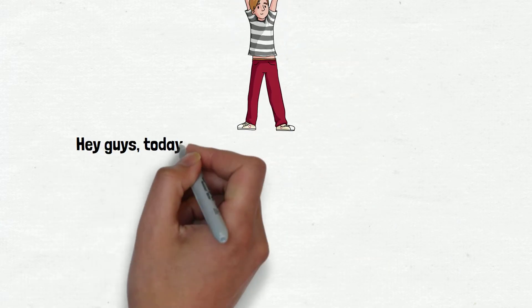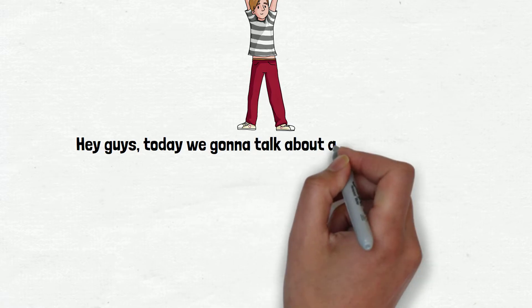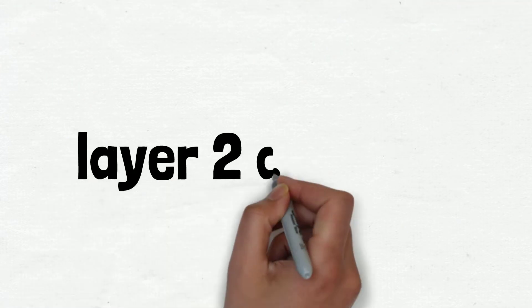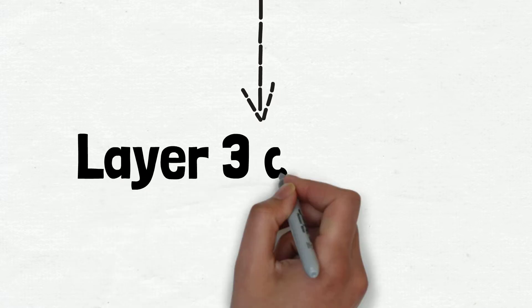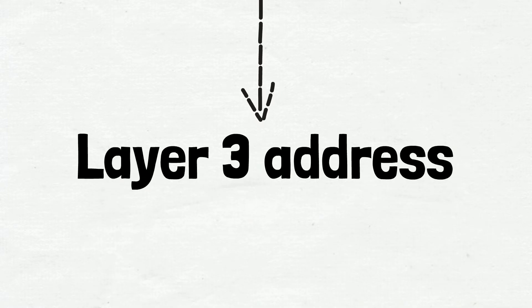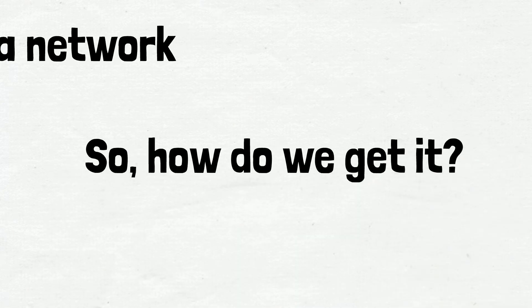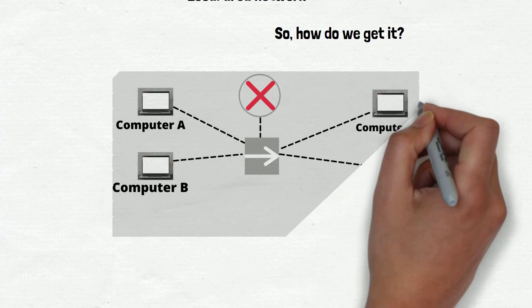Today we're going to talk about Address Resolution Protocol, or ARP — what it is and what it's used for. It's simply used for mapping a Layer 2 address to a Layer 3 address. If we want to communicate on a local area network, we need the MAC address of that particular device. So how do we get it? The answer is ARP.